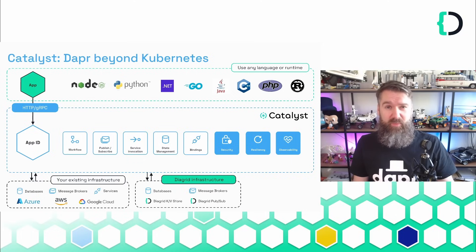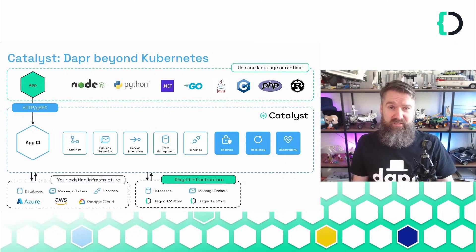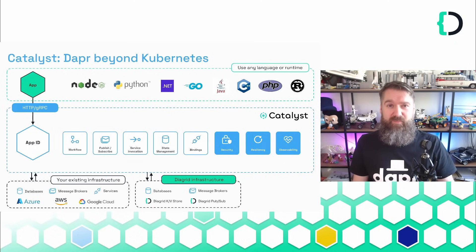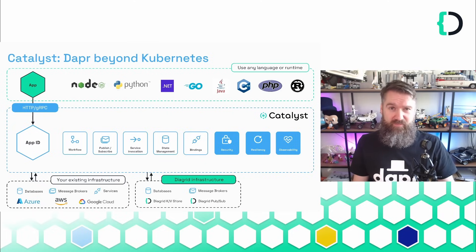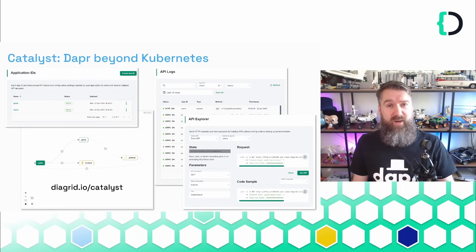You get all the benefits of the built-in features that Dapr offers, with the additional flexibility to use the APIs from anywhere. Currently, Catalyst offers five APIs: Workflow, PubSub, Service Invocation, Key-Value Store, and Bindings. For more information, visit diagrid.io/catalyst.